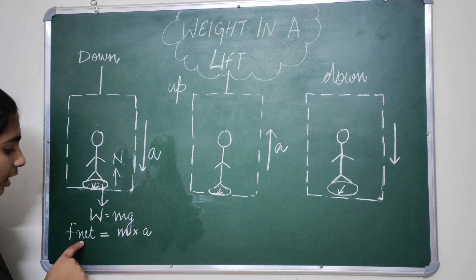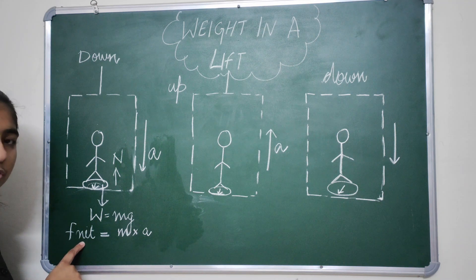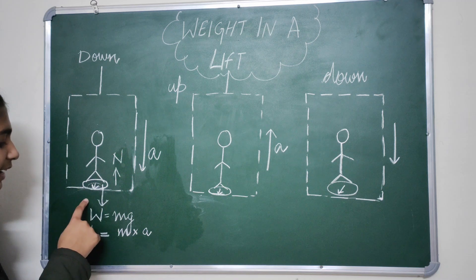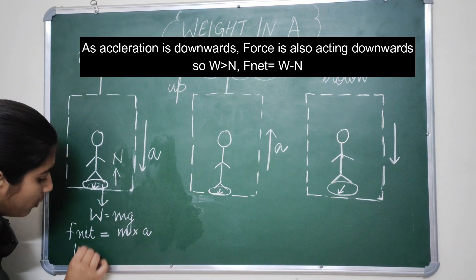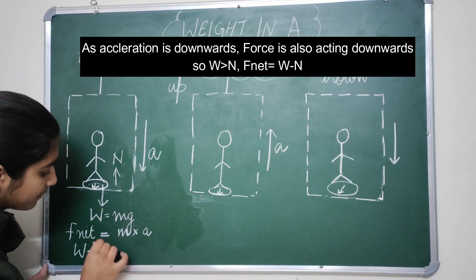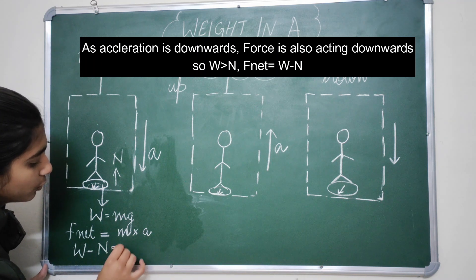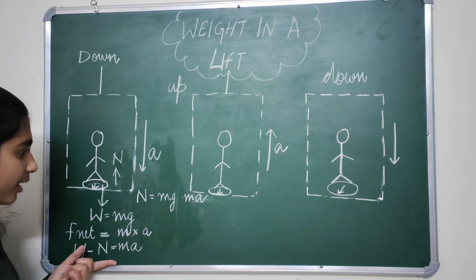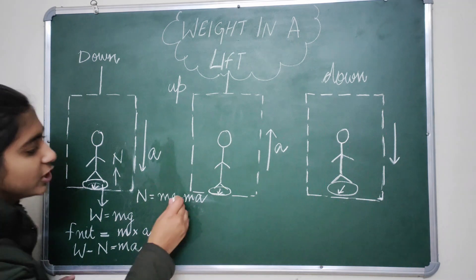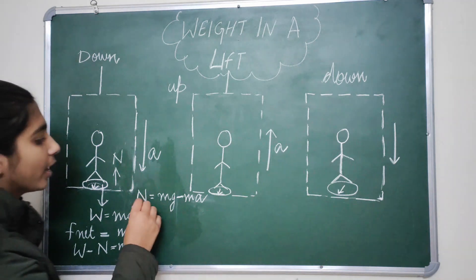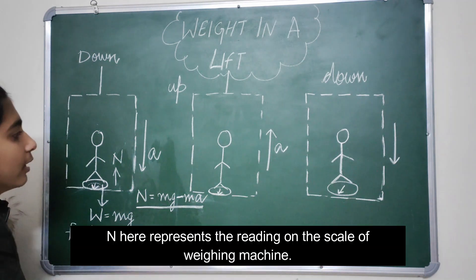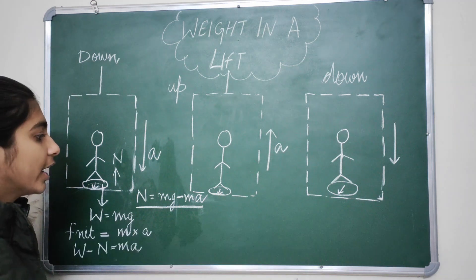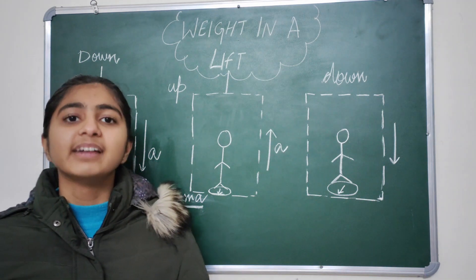If we further calculate or solve the F net for this system or this body, we can write the F net as W minus N equals MA. So if we calculate N from here, it comes out to be MG minus MA. So when we are traveling in the downward direction in an elevator, we feel some lightness in our body.